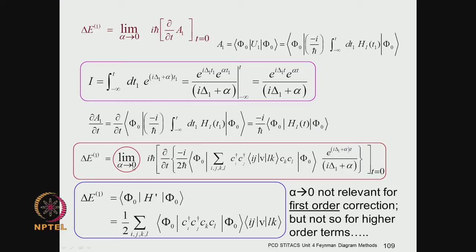In the limit alpha going to 0, when you take the first derivative with respect to time you have got e to the i delta_1 t and e to the alpha t, and that will give you i delta_1 plus alpha when you take the time derivative. That will cancel the 1 in the denominator, and you are left with the exponential function which in the limit alpha going to 0 becomes unity. So in the first order, alpha does not show up in your final result at all — the correction is quite independent of alpha. However, for second order terms and higher order terms you have to keep track of that.